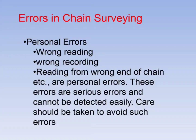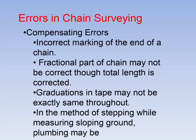Compensating errors in chain surveying: Incorrect marking of the end of the chain, fractional part of the chain may not be correct even though total length is correct, graduation on tape may not be exactly the same throughout, errors in the method of stepping while measuring sloping ground, and plumb bob errors. These errors are compensating in nature.